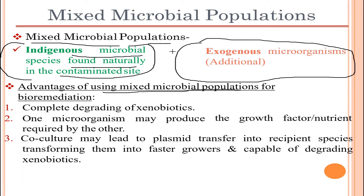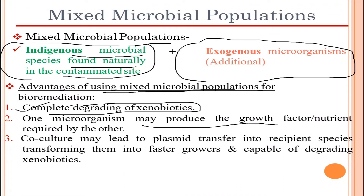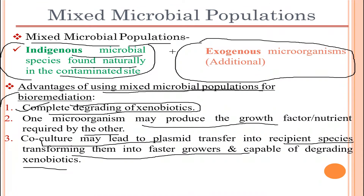The advantages of using a mixed microbial population for bioremediation include: complete degradation of xenobiotics, finishing off all contaminants. One microorganism may produce a growth factor or nutrient required by another. Also, co-culture may lead to plasmid transfer into the recipient species, transforming them into faster growers capable of degrading xenobiotics.